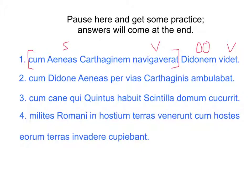Moving on to the next sentence — cum Didona. I immediately see that Didona is an ablative. So, cum plus ablative — probably a preposition. Aeneas is the subject, and then we have 'vias Carthaginis' — 'vias' takes a genitive, 'Carthaginis' is genitive for sure — and then 'ambulabat' is the verb.